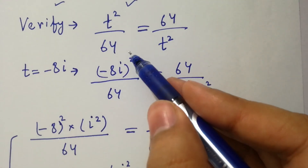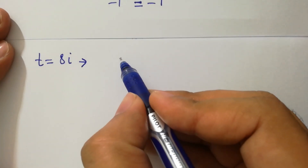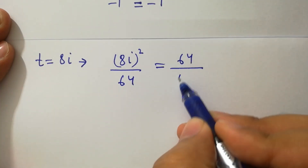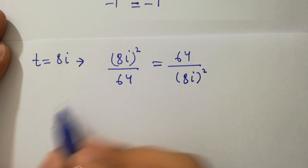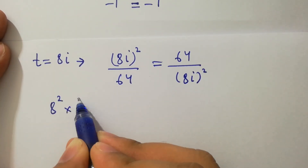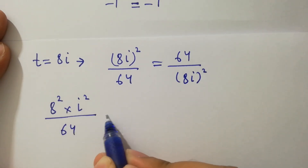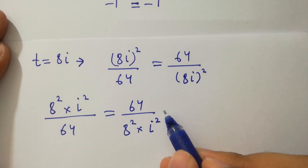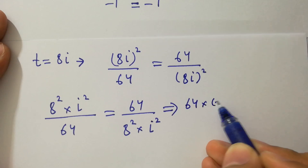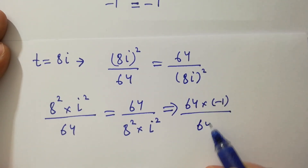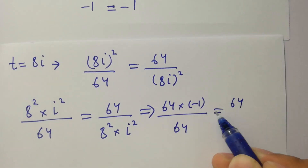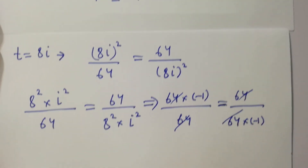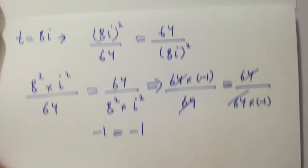For t equal to plus 8i, we have 8i squared over 64 equal to 64 over 8i squared. That gives 8 squared times i squared over 64 equal to 64 over 8 squared times i squared. Since i squared equals minus 1, we get minus 1 over 64 over 64, and 64 cancels, giving minus 1 equal to minus 1.